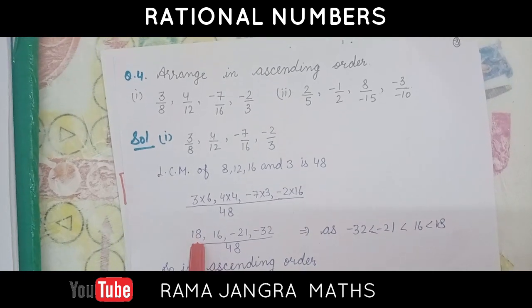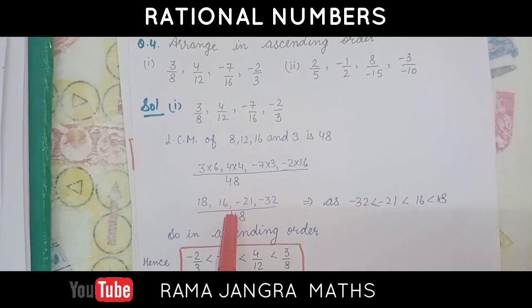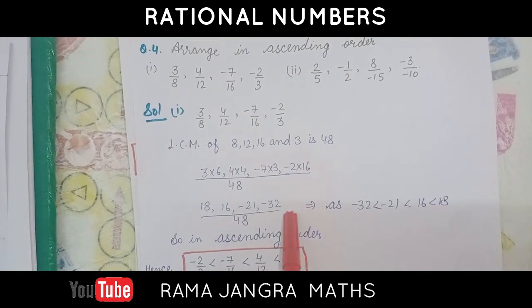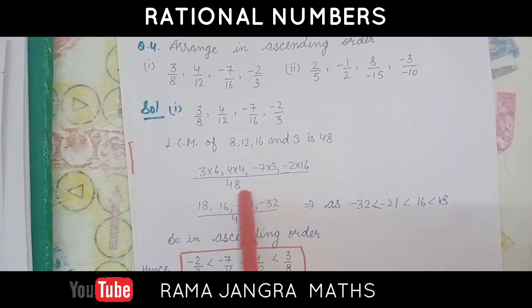So, we can get here, 18, 16, minus 21 and minus 32.